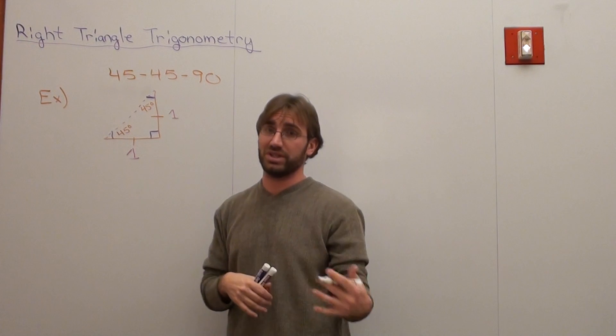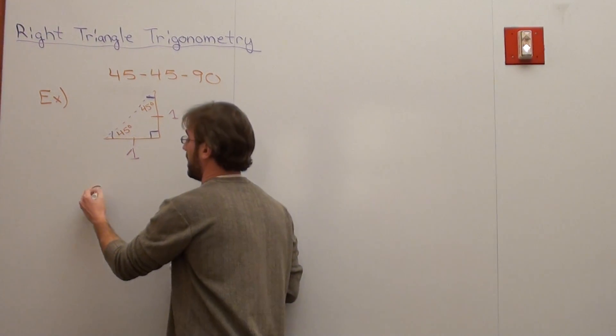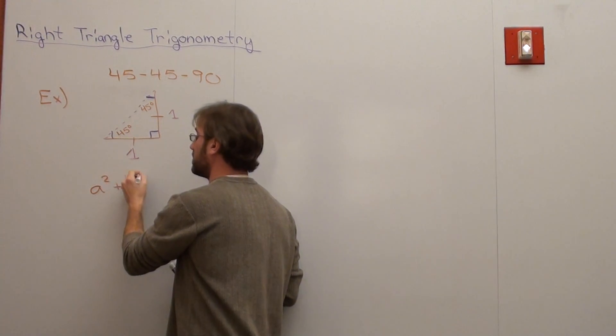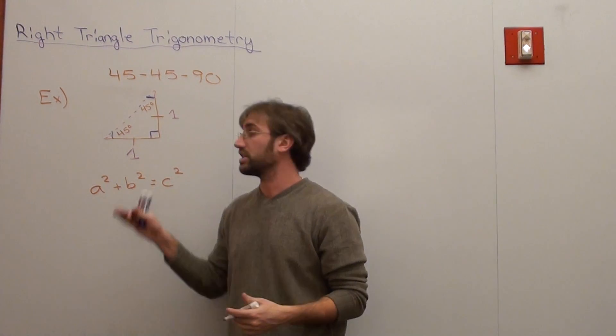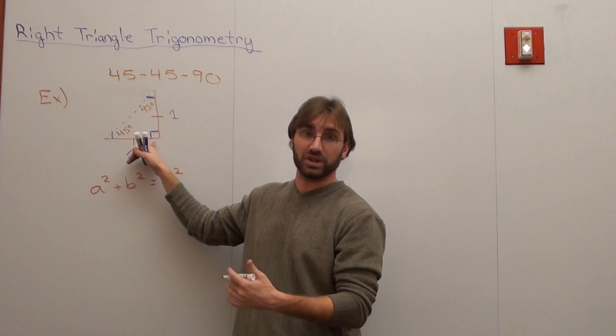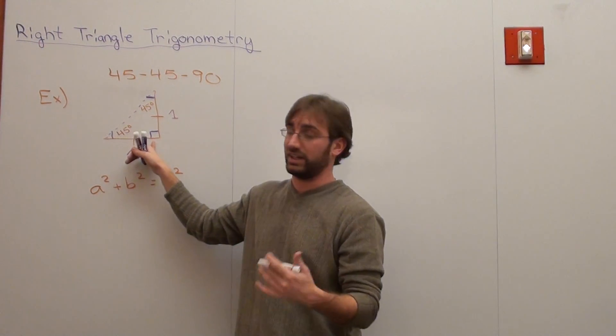The hypotenuse, the longest side, is always c squared. So I've got this a squared plus b squared equals c squared problem. I only use this formula in a right triangle. This is a right triangle because it's got an angle of 90 degrees.